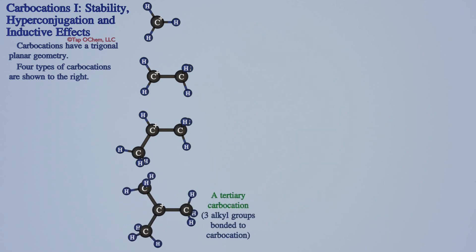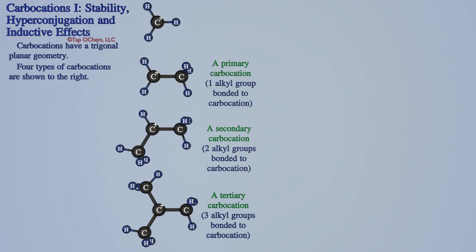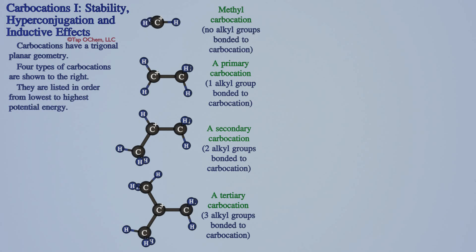A tertiary carbocation has three alkyl groups bonded to the carbocation center. A secondary carbocation has two alkyl groups bonded to the carbocation center, and a primary carbocation has one alkyl group bonded to the carbocation center. A methyl carbocation only has hydrogen atoms bonded to the carbocation center.